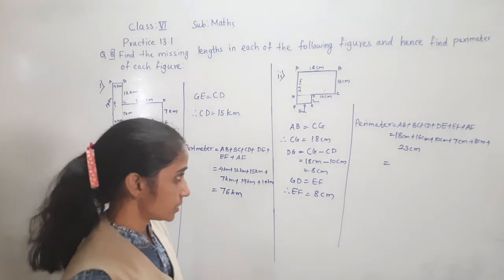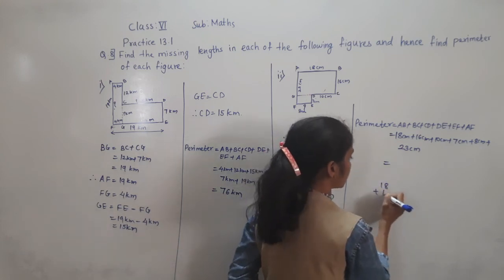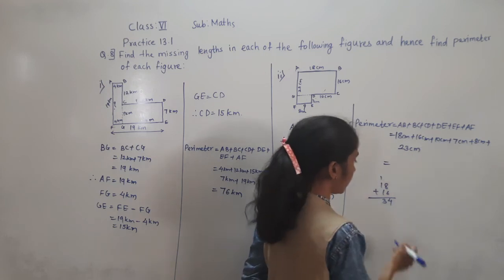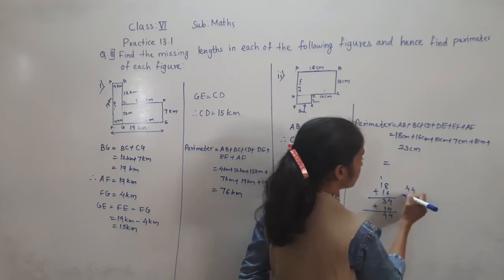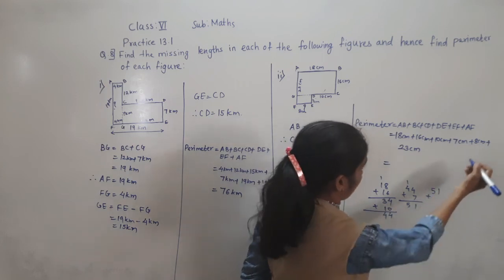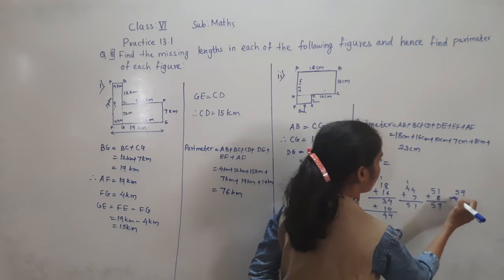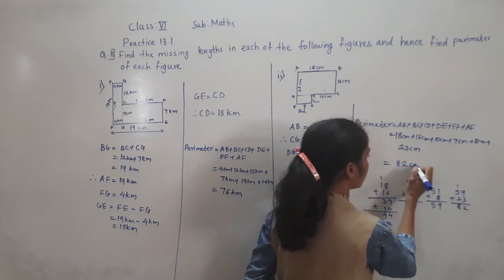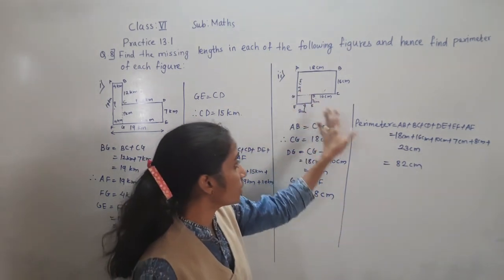Now AB = 18 cm, plus BC = 16 cm, plus CD = 10 cm, plus DE = 7 cm, plus EF = 8 cm, plus AF = 23 cm. Adding: 18 + 16 = 34, 34 + 10 = 44, 44 + 7 = 51, 51 + 8 = 59, 59 + 23 = 82 cm. So the perimeter of this given figure is 82 cm.